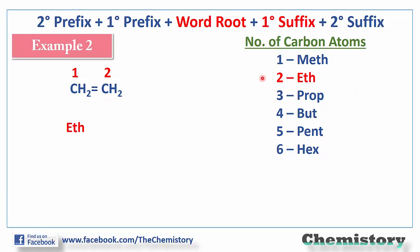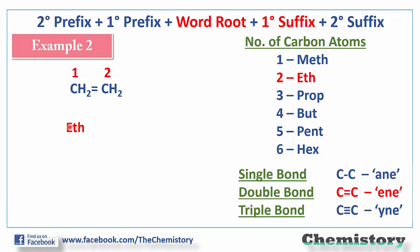Example number two: a chain of two carbons is given. Referring to the word root table, for a two-carbon chain the word root is 'eth'. A double bond is visible between the two carbons, so the primary suffix will be 'ene'. The compound's name becomes 'ethene'.